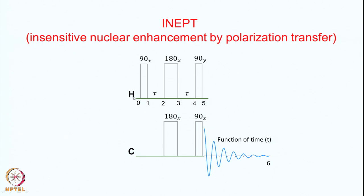The pulse sequence for this is shown here. On the proton channel you apply a 90x pulse, followed by tau, and then a 180 degree pulse which is applied simultaneously on both proton and carbon channels. Then you have another time period tau, followed by a 90 degree pulse on the proton channel and a 90 degree pulse on the carbon channel, and then this is the FID.